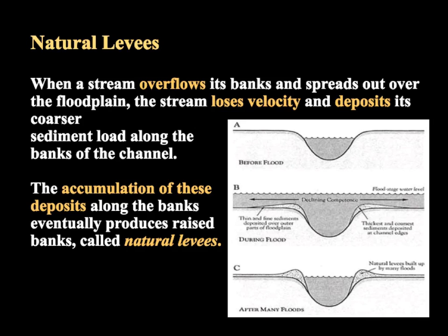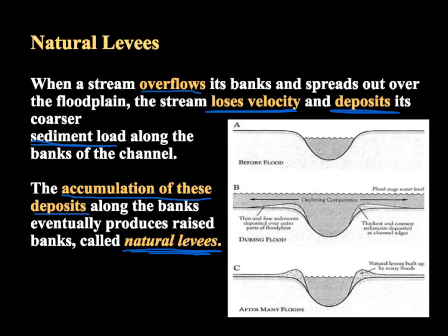As rivers sometimes overflow, the stream loses velocity and deposits its sediments along the banks of the channel. When flooding occurs, the water comes up over the edge and as it spreads out it slows down, leaving a layer of mud and sediment — even a higher layer right at the bank. As these muds and sediments accumulate, we call them natural levees, as opposed to artificial levees where we build up the banks of a river to try to keep floodwaters at bay.